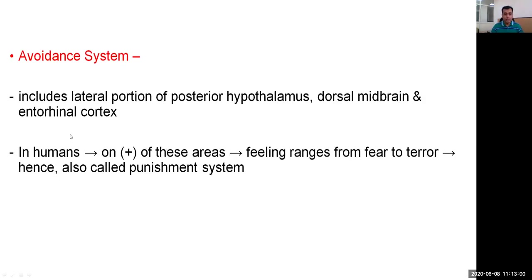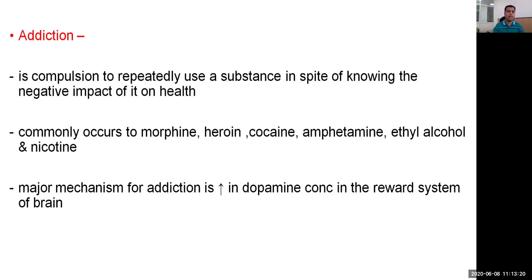The avoidance system includes the lateral portion of the posterior hypothalamus, dorsal midbrain, and entorhinal cortex. In humans, stimulation of these particular areas gives feelings which range from fear to terror, and therefore it is also called the punishment system or avoidance system.